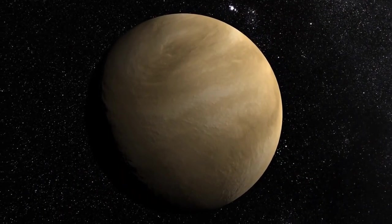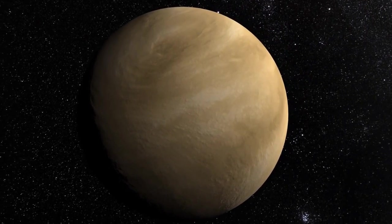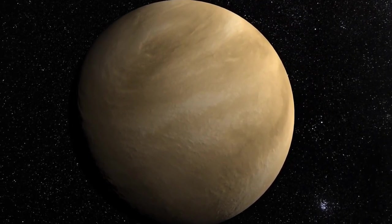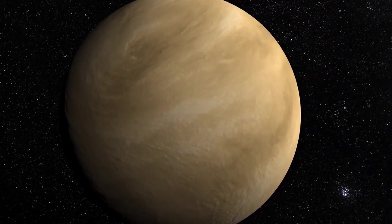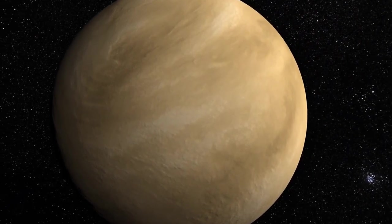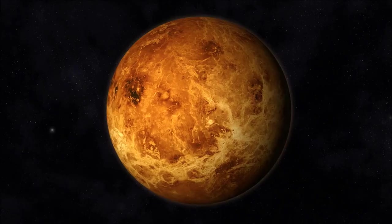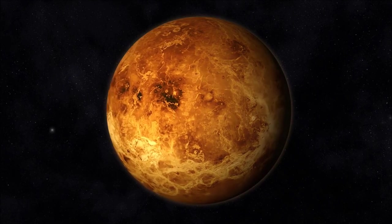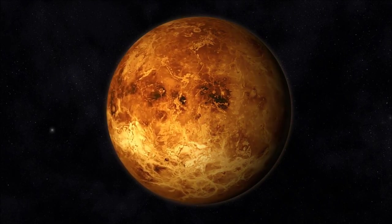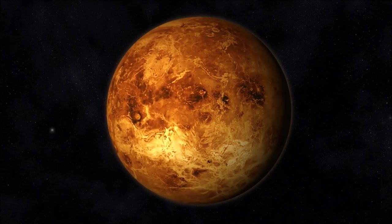Venus is a blazing inferno of a planet, second only to the sun in brightness in the night sky. Venus's thick atmosphere traps heat, creating a runaway greenhouse effect. Its scorching surface temperature of 462 degrees Celsius makes it the hottest planet in the solar system.